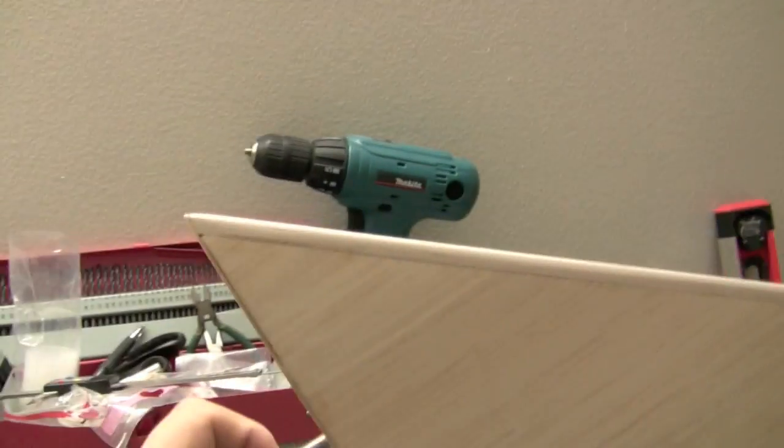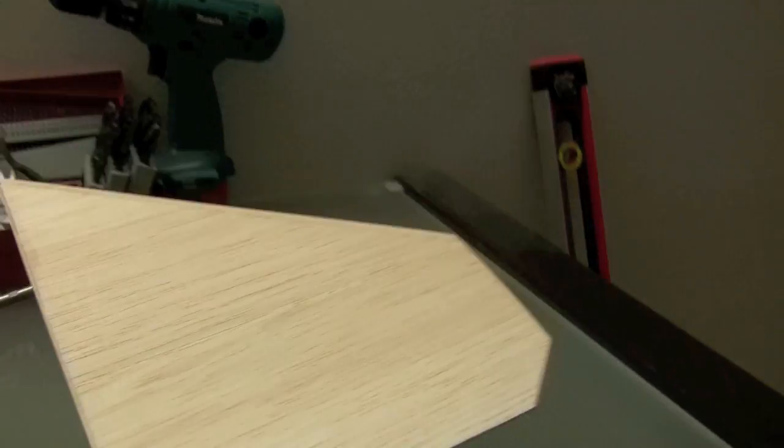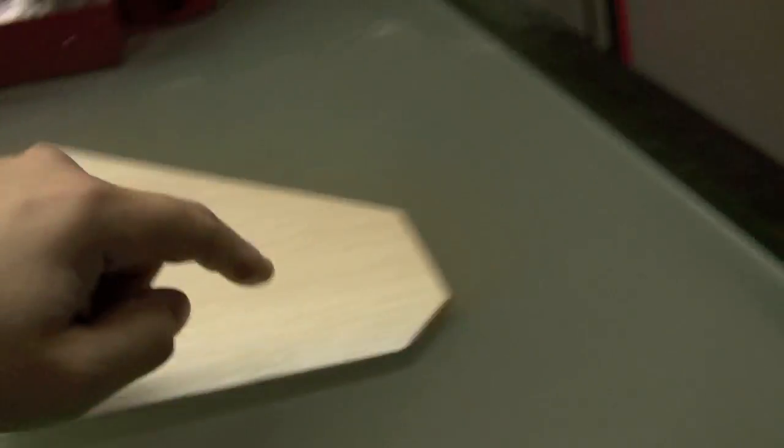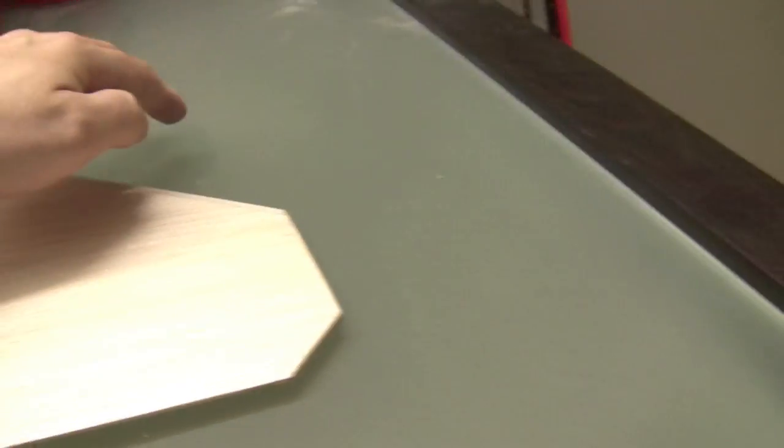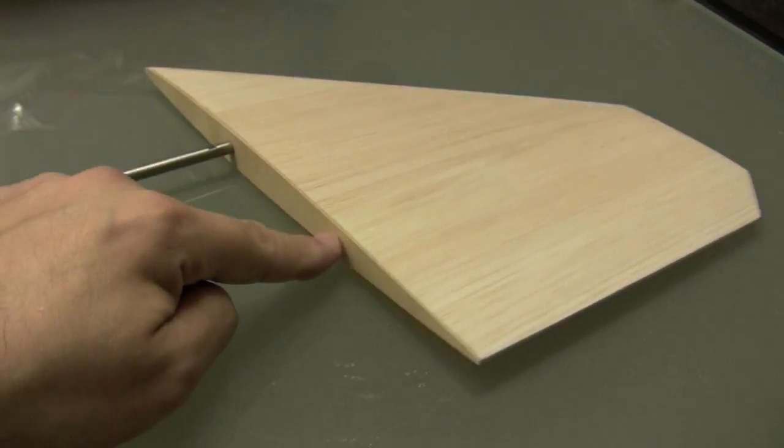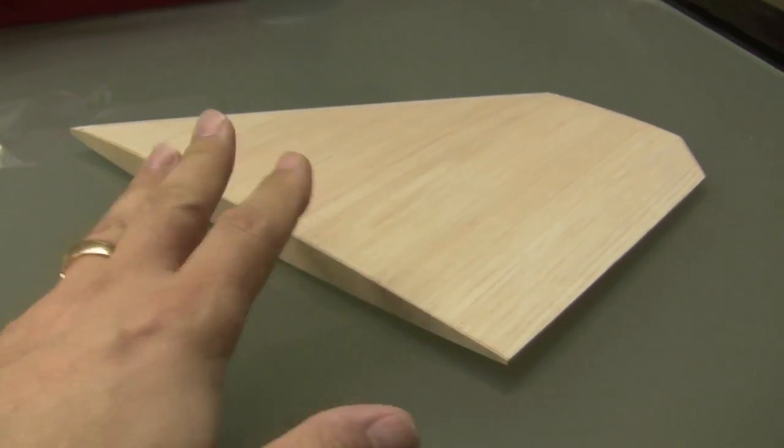Pretty much what you have to do is sand the leading edge to shape and put the 1/32 inch ply in pieces here, here, and here.